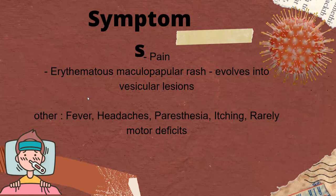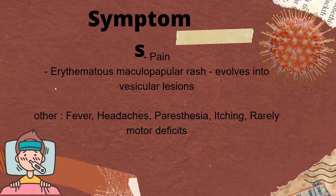The symptoms of varicella zoster include pain and an erythematous maculopapular rash that evolves into vesicular lesions — initially starting as a maculopapular rash and later evolving into vesicular lesions. Other symptoms include fever, headache, paresthesia, itching, and patients may also have motor deficits.